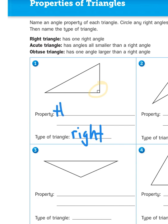So this must be a right triangle with the right angle. And what's the property? Well, it has a right angle. Pretty straightforward.